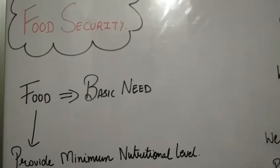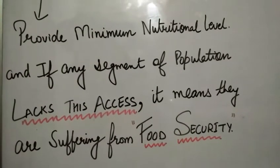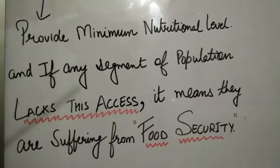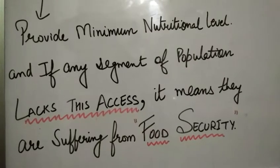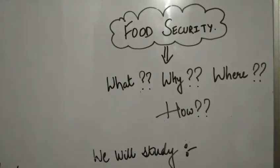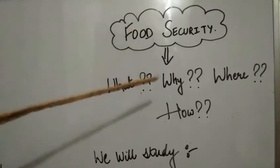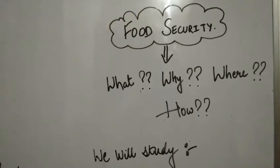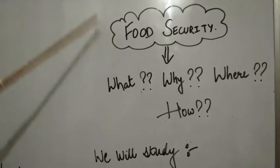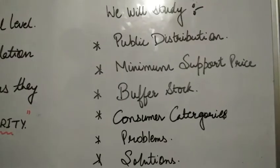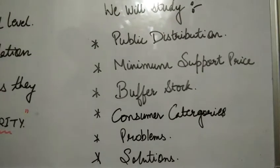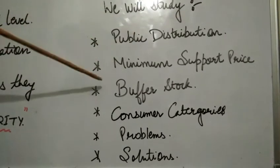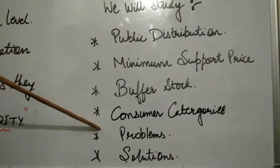As we all know, if any segment of the population lacks access to food, it means that segment is suffering from food insecurity. In this chapter, we will understand food security — why, where, and how we require it, and what institutions work behind it to provide this security to the population. We will also discuss the Public Distribution System (PDS), Minimum Support Price (MSP), buffer stocks, consumer categories, and the problems and solutions related to food security.